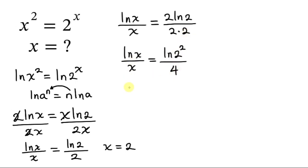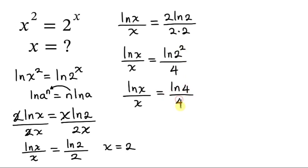So this results in ln(x) all over x equal to ln(2²) all over 4. Now compare again what we have on the left to what we have on the right. You'll notice that the value of x here is equal to 4. So we've been able to solve for two values of x, which are 2 and 4.